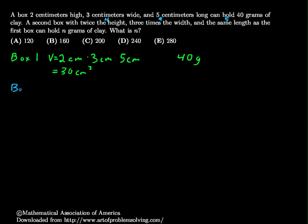For box 2, the volume is 4 cm multiplied by 9 cm multiplied by 5 cm. Four times five is 20, times nine is 180 cubic centimeters. We have an unknown mass n that it can hold.